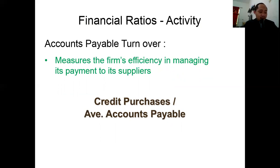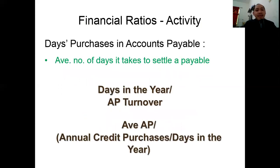Accounts payable turnover measures the firm's efficiency in managing its payments to suppliers. The formula is: credit purchases divided by average accounts payable. This means we also need to pay our suppliers on time and follow the credit days given.